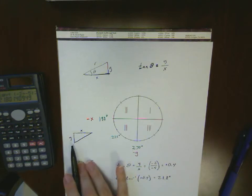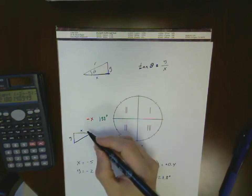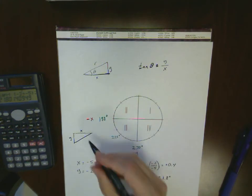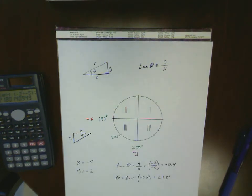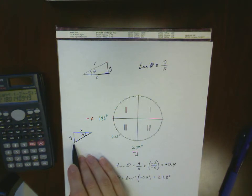Actually, that's to the left and down. Let's not get myself confused. So the angle that this finds is actually this angle theta. So it tells me it's 21.8 degrees.